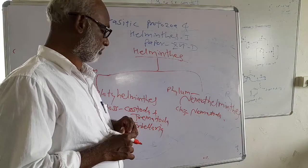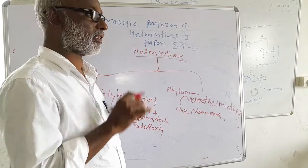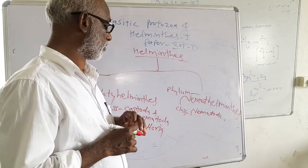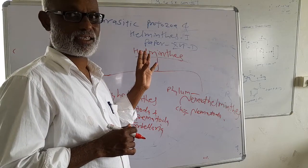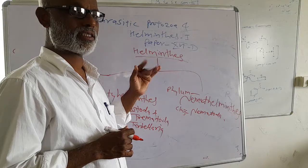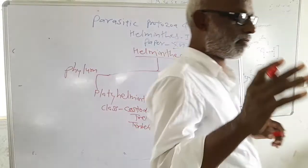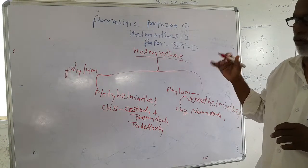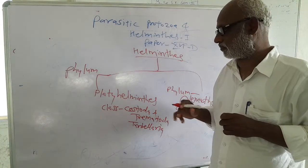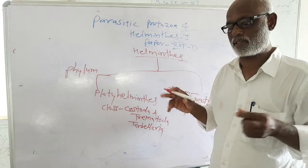Nematodes and trematodes are totally endoparasites or ectoparasites. Ectoparasites live on the body surface — these include insects like ticks, mites, head lice, pubic lice — all are ectoparasites belonging to phylum Arthropoda. Mosquitoes are also ectoparasites that live on the body surface and feed on blood, causing different types of diseases.